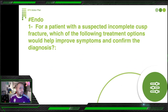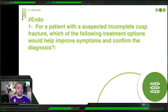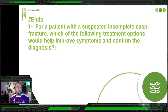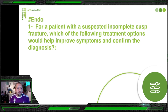First question from Endo: for a patient with suspected incomplete cusp fracture, which of the following treatment options would help improve symptoms and confirm the diagnosis? The question is compound — he gave a diagnosis but is not asking for final treatment, because we suspected something, so we need to confirm our diagnosis before jumping to a treatment plan. What are we going to do to confirm that we have an incomplete cusp fracture?